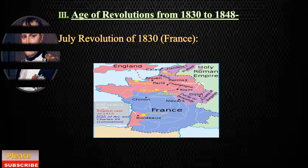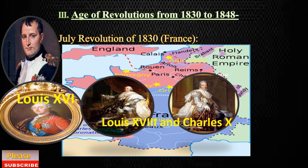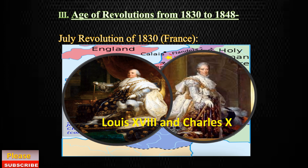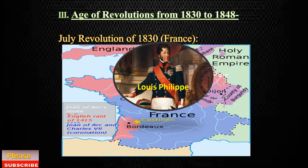The first revolution took place in France in July 1830. After the defeat of Napoleon in 1815, the Bourbon kings — the brothers of the executed Louis XVI — Louis XVIII and Charles X were restored to power in France. They were highly conservative. The July Revolution was started to overthrow the conservative Bourbon monarchy and establish a new constitutional monarchy under the more moderate nobleman, Louis-Philippe.